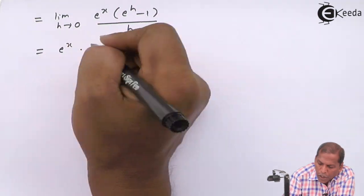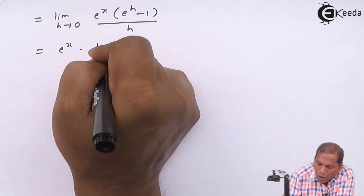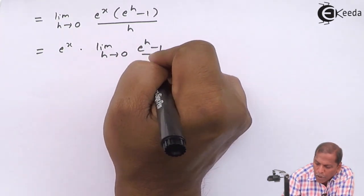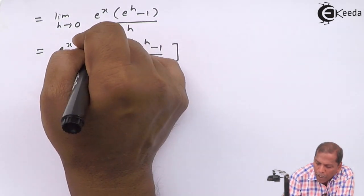e raise x into limit h tends to zero e raise h minus one, whole thing divide by h.